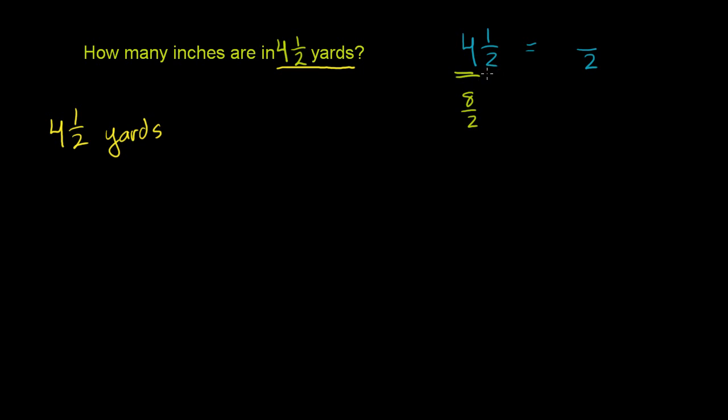And then you have that plus 1 half. That is going to give you 9 halves. The quick way to do it, 2 times 4 is 8. 8 plus 1 is 9. So 4 and 1 half is the same thing as 9 halves.